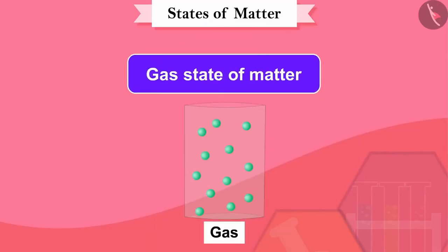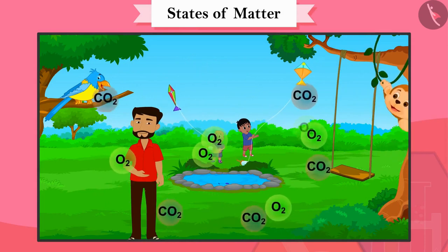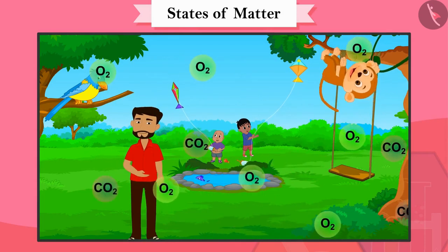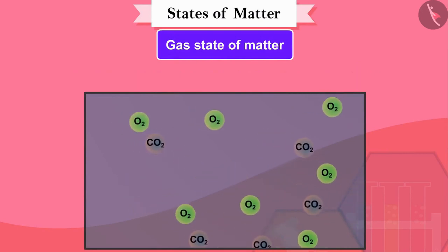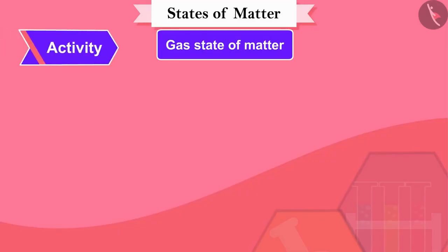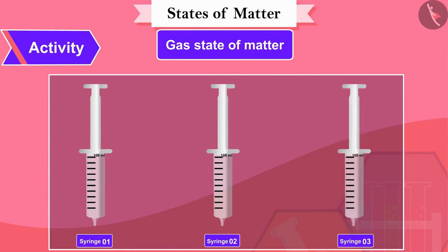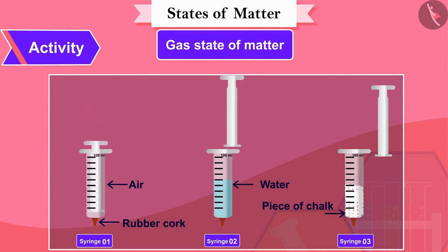Now we will learn about the gaseous state. All living beings breathe for their existence, and gases present in the atmosphere — especially oxygen and carbon dioxide — are essential for animals and plants. Do these gases have any fixed shape or volume? No. Matter in a gaseous state has no fixed shape or volume. Let's do an activity: take three syringes of 100 ml and close their ends with a rubber cork. Fill air in the first syringe, water in the second, and a piece of chalk in the third. Now try to compress all three pistons.